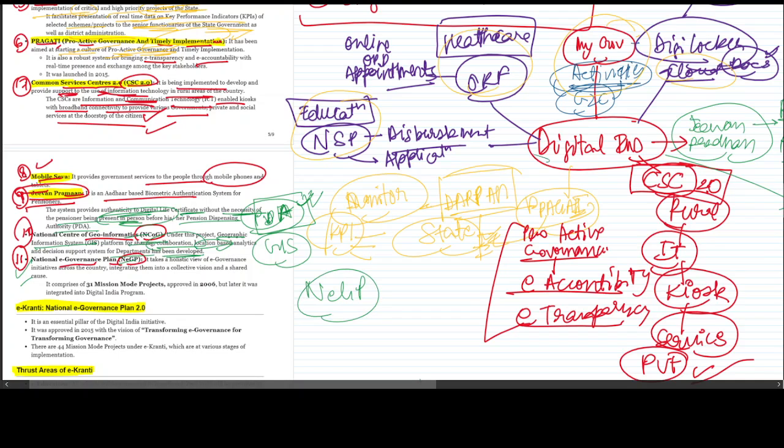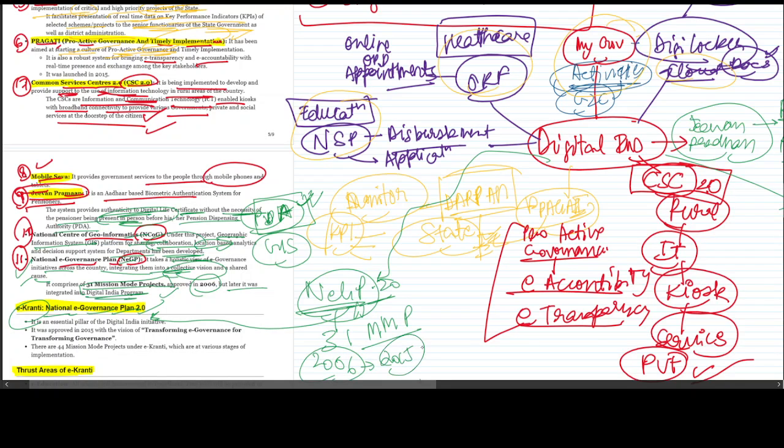Next is National E-Governance Plan NEGP 2.0, because the first one was in 2006. Later it was integrated into Digital India. NEGP is what we call Digital India. NEGP takes a holistic view of governance initiatives across the country, integrating them into collective vision and a shared cause. It comprises 31 mission mode projects MMP. First time was 2006, but after revamp, we launched it in 2015 with Digital India.